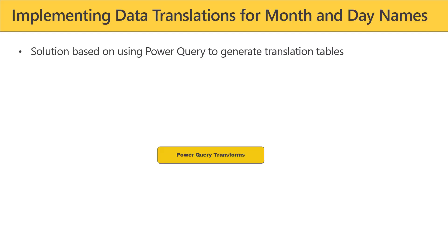I'm going to propose a solution for implementing data translations for month and day names. It's the same solution used in the labs, and this solution is going to be based on Power Query. With Power Query, there's a very powerful language called M, and what we're able to do is take one type of data and transform it into another type of data.